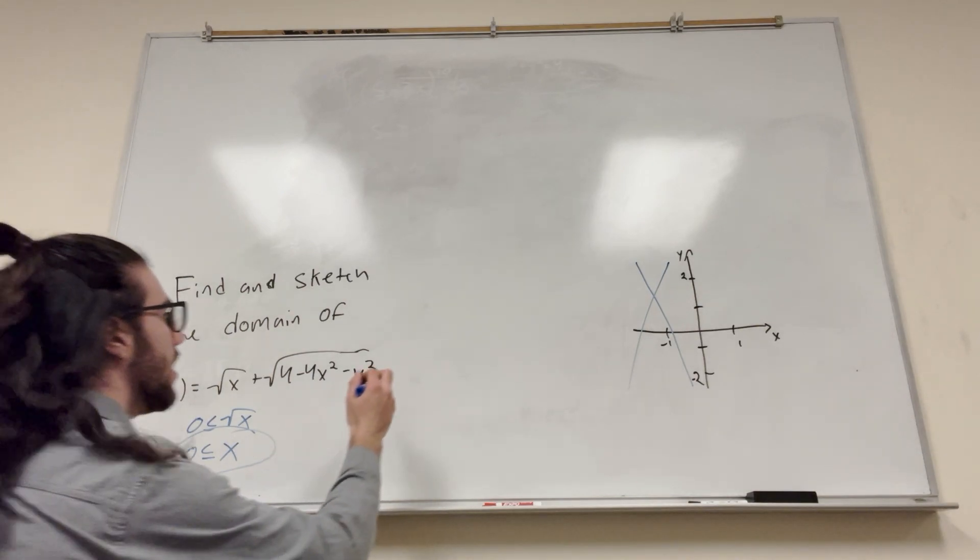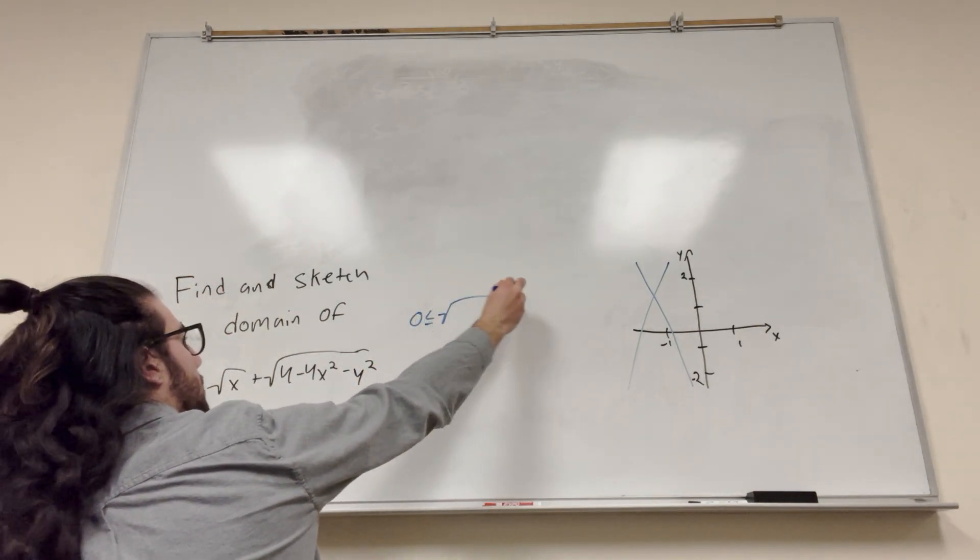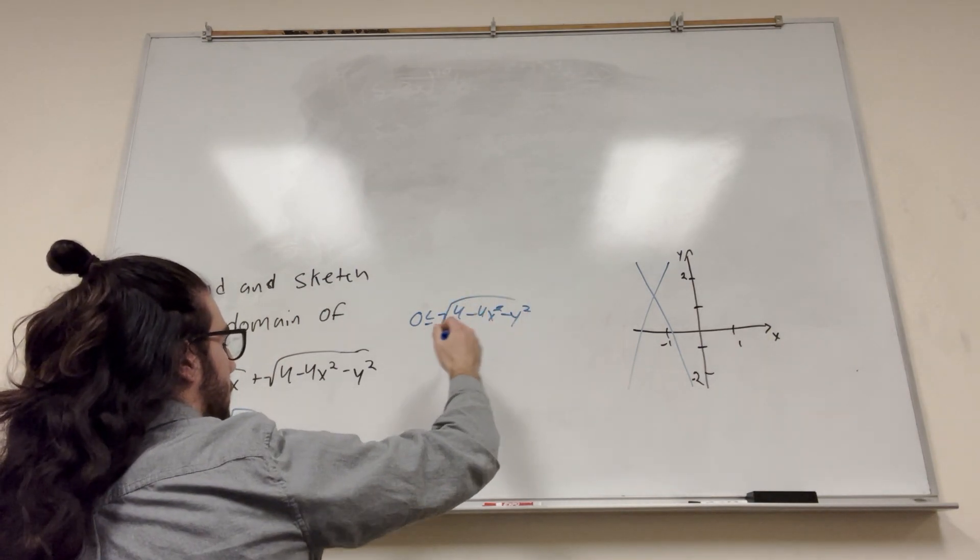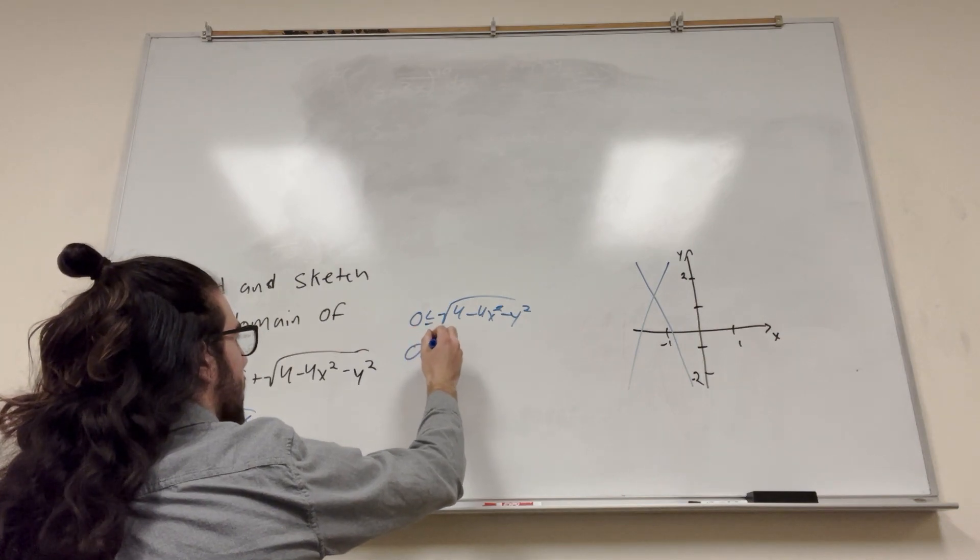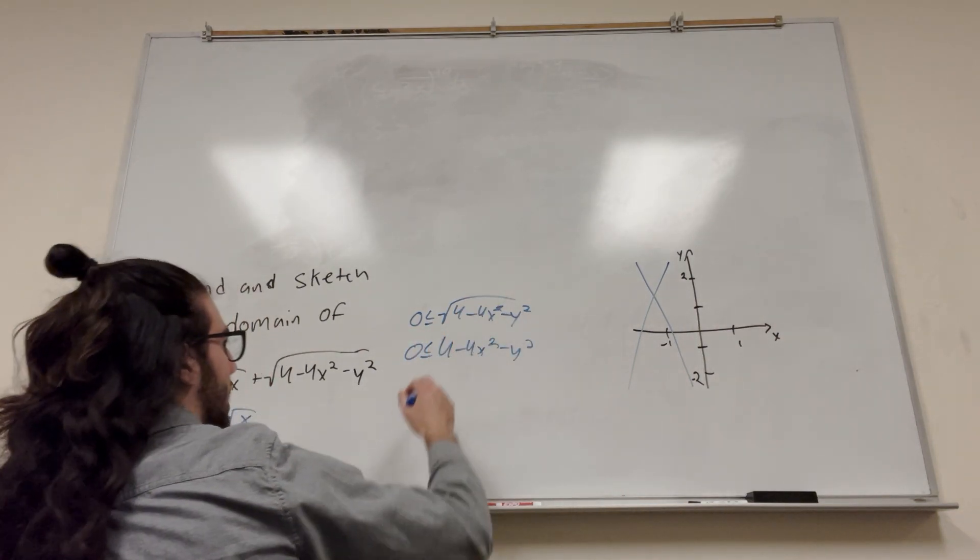All right, so let's do it again for the next one. We have zero has to be greater than or equal to square root of 4 minus 4x squared minus y squared. So perfect. We can get rid of the square root and move that. So that's going to be 4 minus 4x squared minus y squared. Just square both sides, of course.